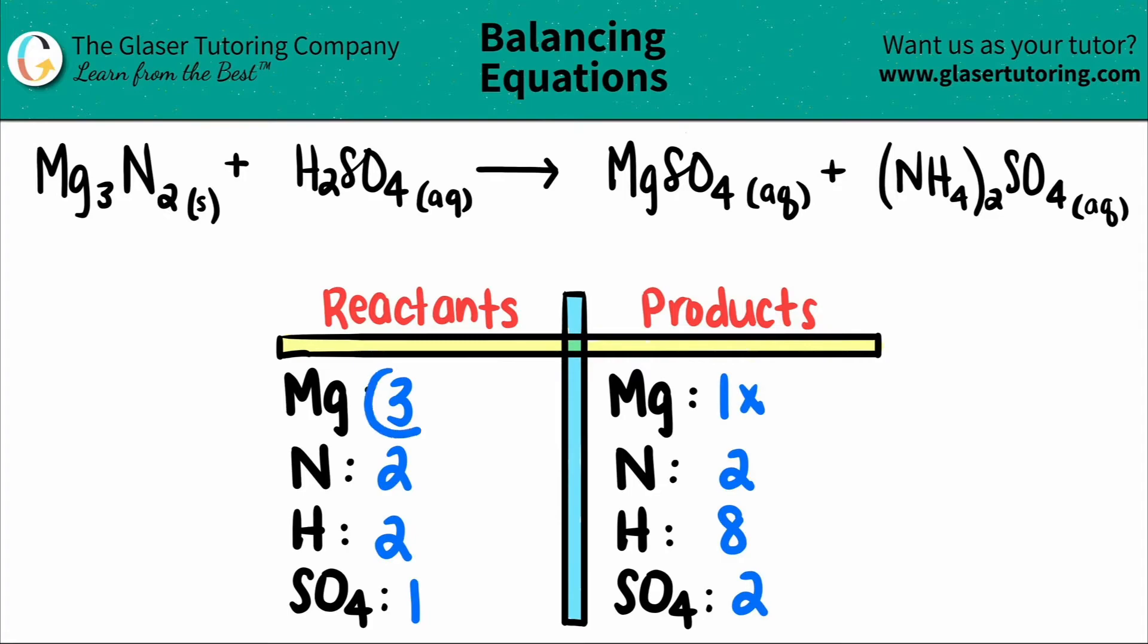One times what will get me to three? One times three. Whatever number that you said is going to be the coefficient for where the element is, so I'm going to put a three here. But now you have to be fair. This number gets distributed to the element magnesium and the polyatomic sulfate, so we have to change both numbers.